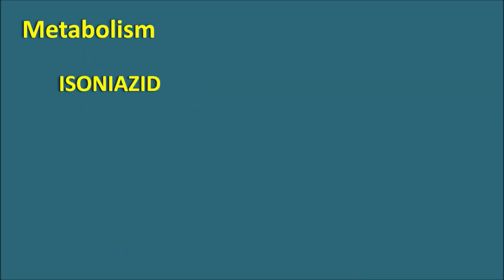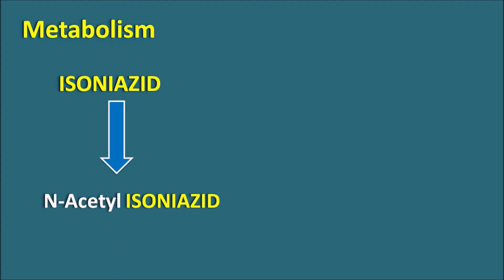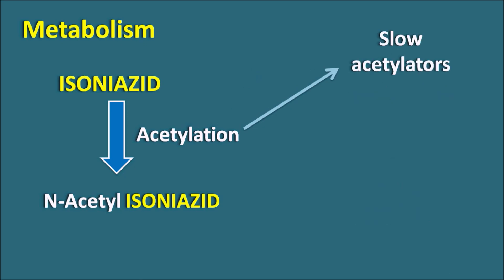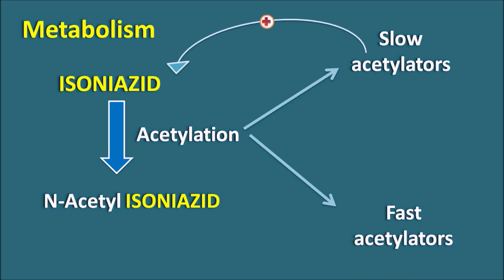Isoniazid undergoes metabolism by various routes, with one important route being N-acetylation to produce N-acetyl isoniazid. This acetylation capacity differs from patient to patient — some patients are slow acetylators and some are fast acetylators. In slow acetylators, there is less metabolism of isoniazid, which increases plasma levels and results in toxicity. Therefore the dose should be individualized: slow acetylators should receive a lower dose, while fast acetylators can receive a higher dose.